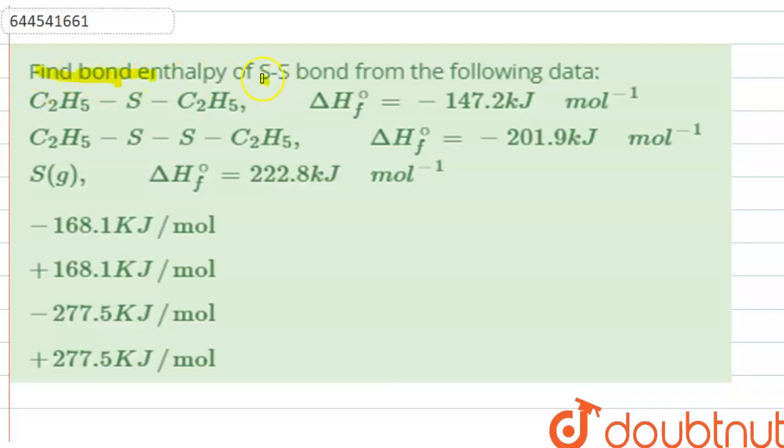The question here is find bond enthalpy of S-S bond from the following data. C2H5-S-C2H5, this compound is given and the delta H formation is 147.2 kJ/mol. Similarly C2H5-S-S-C2H5, the delta H formation is minus 201.9 kJ/mol. The delta H formation for sulfur is 222.8 kJ/mol.